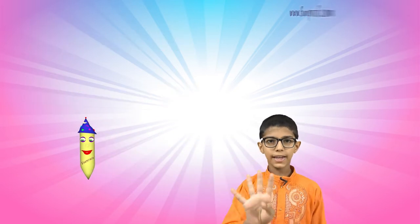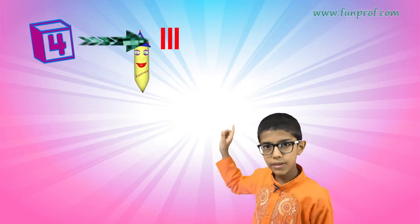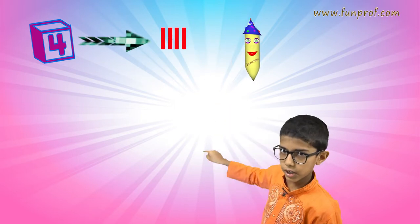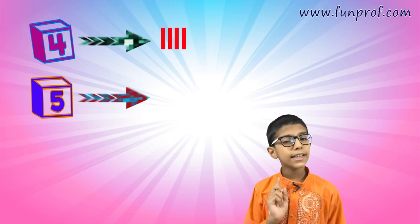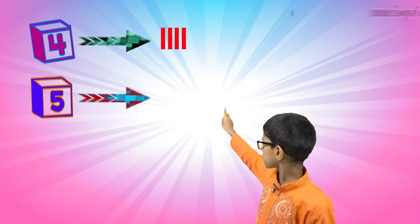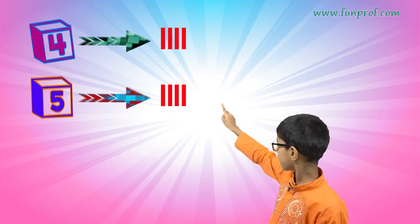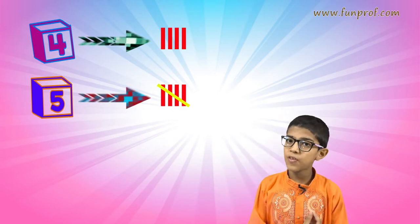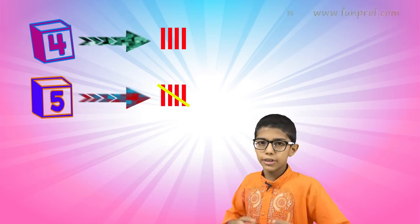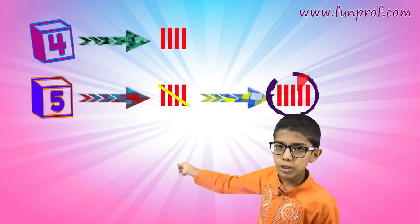When it reaches 4, we write 1, then 2, then 3, then 4. But for 5, it's a little different. We write 1, 2, 3, 4 and then a cut — this becomes 5. We do not write 1, 2, 3, 4, 5 as five separate vertical lines — that would be wrong.